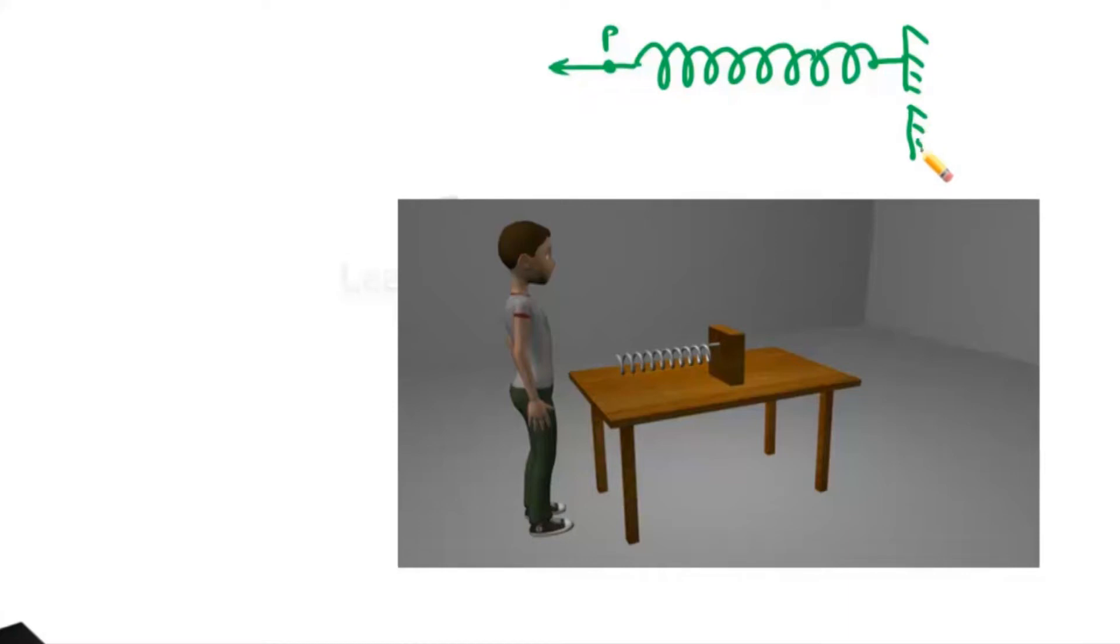That means next instant, the spring will expand like this. And this point P, which was at this point here, now will reach to this point, because of the force what is applied. So the displacement altogether for the spring will be x.